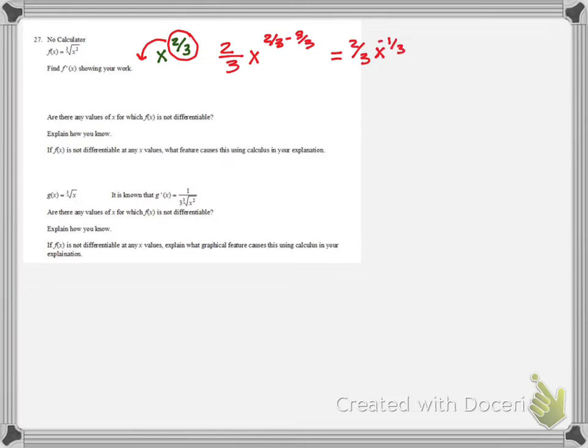And you could leave the answer just like this. This is not a wrong answer. It would also be okay to turn it into 2 in the numerator, 3 over the third root of x. And I gave full credit for either of these.